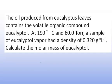In this example, the oil produced from eucalyptus leaves contains the volatile organic compound eucalyptol. At 190 degrees Celsius and 60 torr, a sample of eucalyptol vapor had a density of 0.320 grams per liter. Calculate the molar mass of eucalyptol.